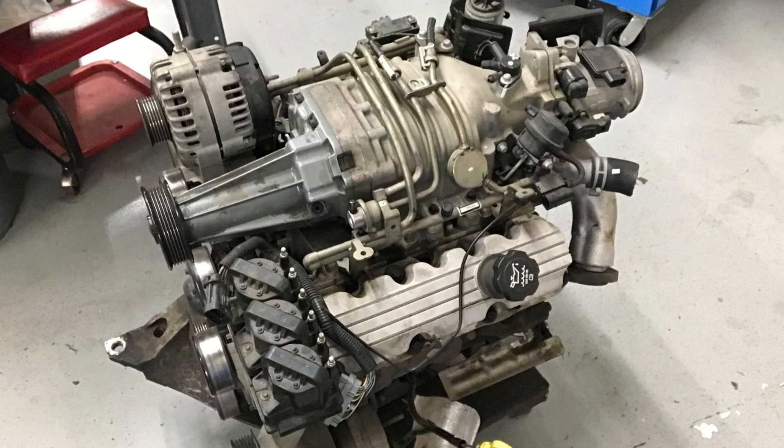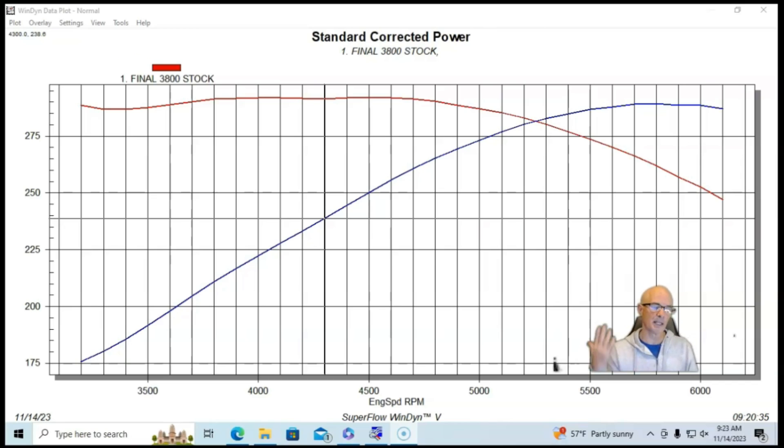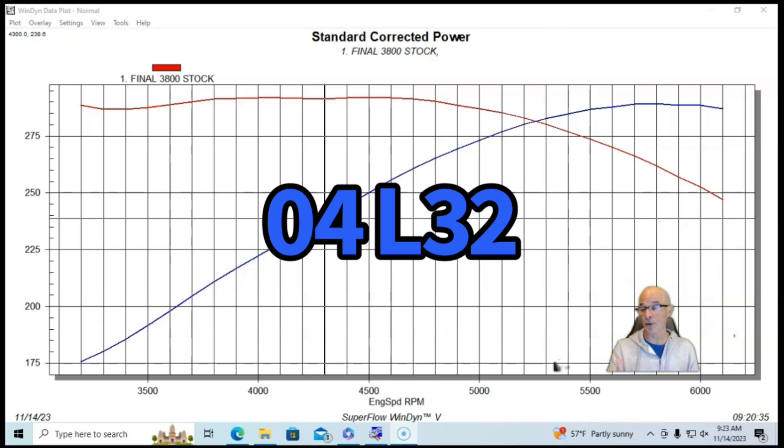We'll start out with our stock 3800 V6. This one was a 2004, meaning it was an L32, already equipped with the Gen 5 blower. We ran this in stock trim with the stock blower, stock blower pulley, stock throttle body, stock intake manifold, cam, heads, everything just the way it came out of the wrecking yard.